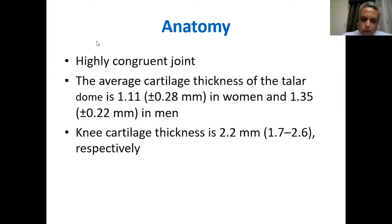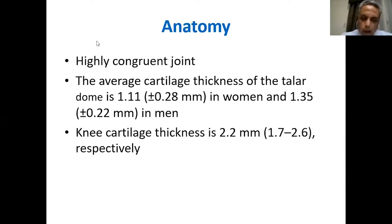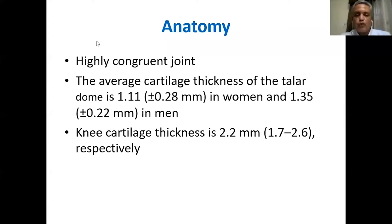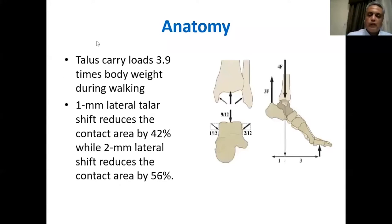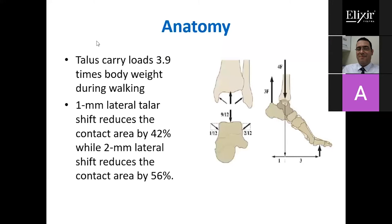However, why is the cartilage thinner? Because the ankle is a very highly congruent joint, which means the loads are equally distributed — the amount of load is equal along different parts of the joint. If you talk about the knee, you find some areas taking very high stresses like opposite the femoral condyles and some areas with much less. However, the cartilage of the ankle joint has very good intrinsic properties, giving it a very good way to absorb high loads.